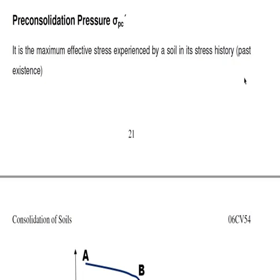The next topic is Pre-Consolidation Pressure. Consolidation is also called Pre-Consolidation Pressure — that is, to what extent a particular soil was subjected to any pressure in the past. It is the maximum effective stress experienced by a soil in its stress history.